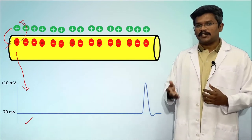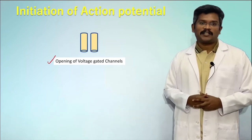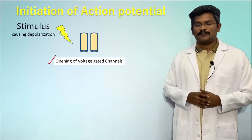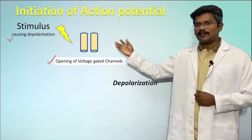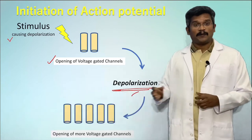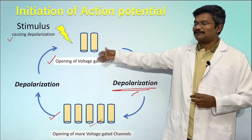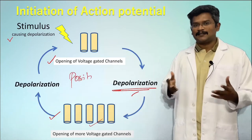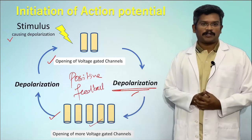An action potential is initiated by the opening of a sufficient number of voltage-gated ion channels, induced by a stimulus. Once these ion channels open, they cause further depolarization, which opens more and more voltage-gated channels, causing still further depolarization. This leads to a positive feedback cycle, which is responsible for the depolarization during an action potential.